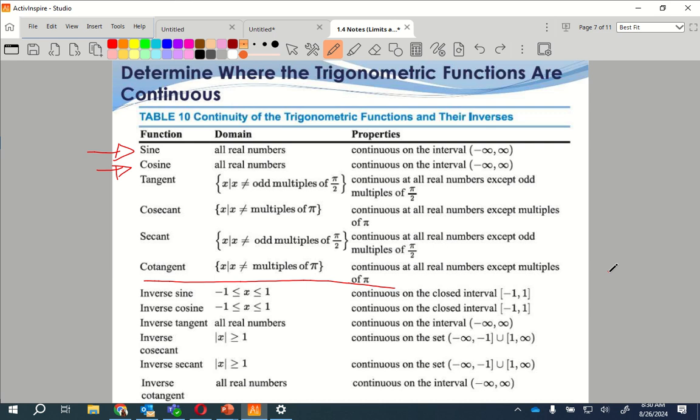Alright, tangent, cotangent are non-continuous because they're sine over cosine or cosine over sine. So, every place where the denominator is zero is going to be an asymptote. So, therefore, the same thing works for their inverses. They're all going to have asymptotes on this one. So, this is a good reference to always go to.